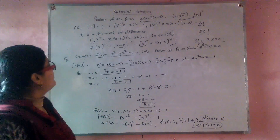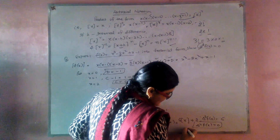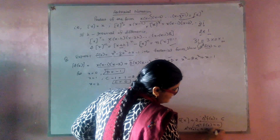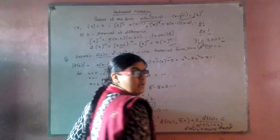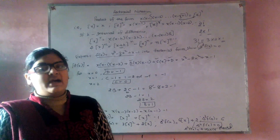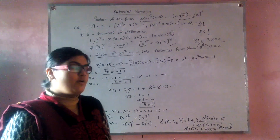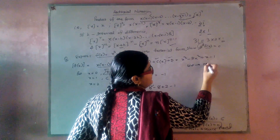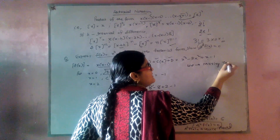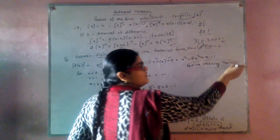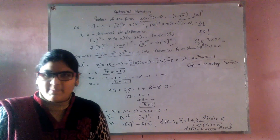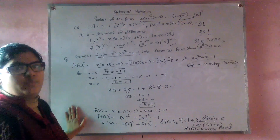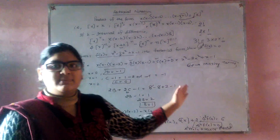I hope you might understand this topic very clearly. This is what we have to prove — hence proved. Now we are going to define finding missing terms using factorial notation. We are discussing this topic right now, and we are leading to our next topic: missing terms.